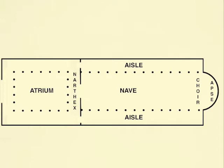The aisles are usually one storey high, but can sometimes be two storeys. The upper level is called a gallery. The nave and aisles are set aside for worshippers. A semicircular apse projects from one of the shorter sides — the apse belongs to the clergy. A small area between the nave and apse is reserved for the altar, called a choir or chancel. It can be separated from the nave by a screen.